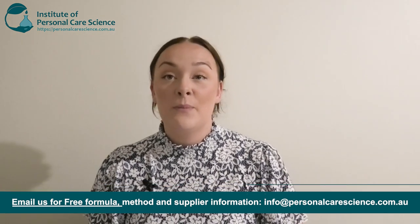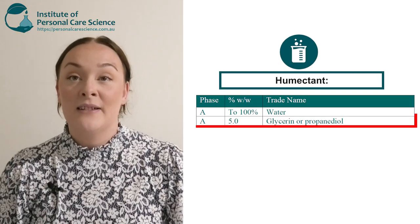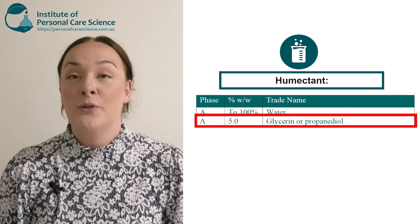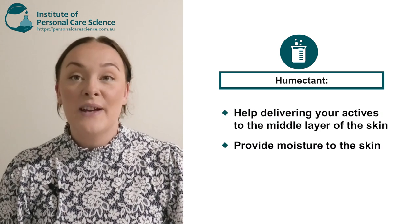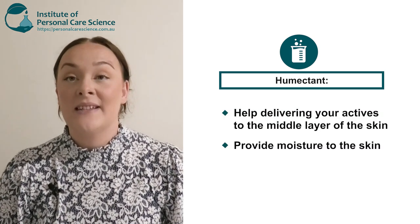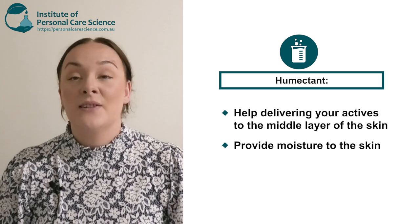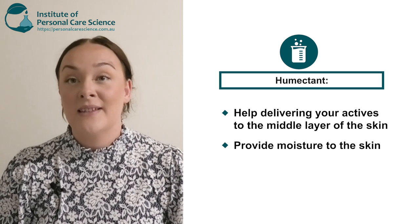One of the first important things you need in your lotion-like serum is a water continuous phase. To this, you need to add a humectant, whether it's glycerin or propanediol. This is going to help deliver your active to the mid-layer of the skin and also provide moisture and suppleness to the skin.